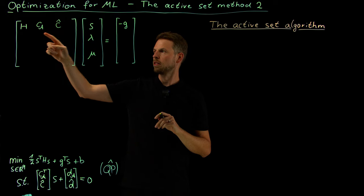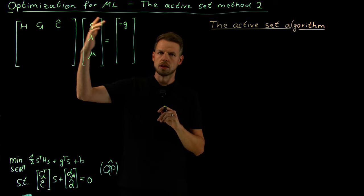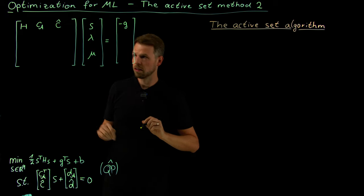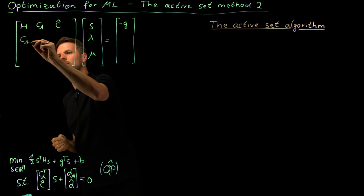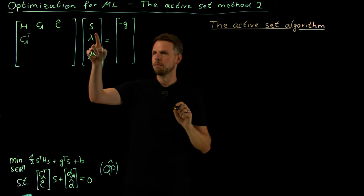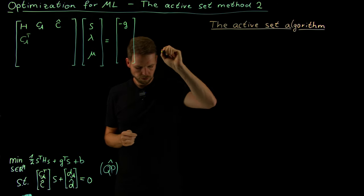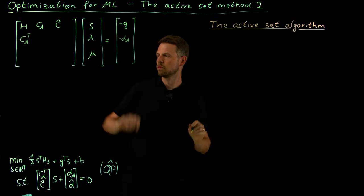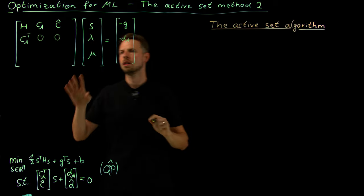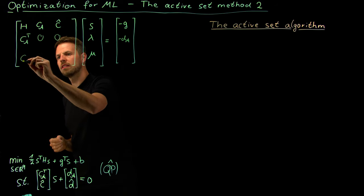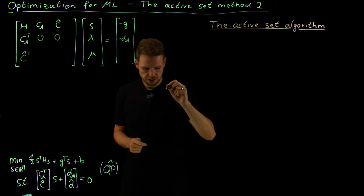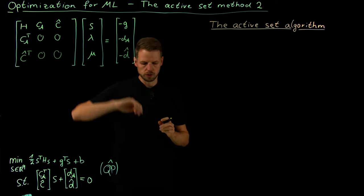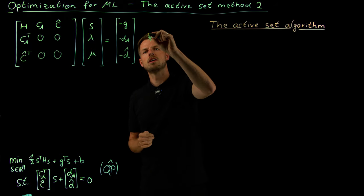The two remaining blocks are conditions that must be satisfied to ensure the constraints are truly satisfied. We need Cᵀ·s + dA = 0 and Ĉᵀ·s + d̂ = 0. There are no lambda or mu components in these equations — they purely enforce that the constraint linearizations are met.